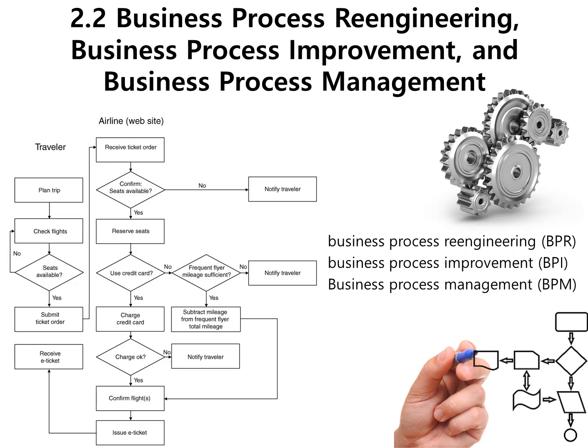A third aspect of organizational change is business process management, or BPM. This is a management system that includes methods and tools to support the design, analysis, implementation, management, and continuous optimization of core business processes throughout the organization.